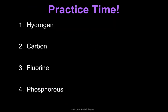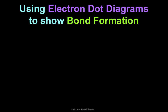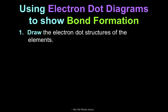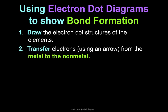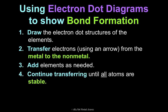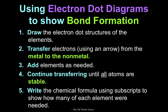Let's practice — pause the video and draw hydrogen, carbon, fluorine, and phosphorus, then press play to see the answers. The reason I want you to know how to do that is so we can use these diagrams to understand bond formation in compounds. To do that, you'll draw the electron dot structures of the elements forming a compound. To show an ionic bond, transfer electrons using an arrow to show they're going from the metal to the non-metal. Keep adding elements as needed until all items are stable, then write the chemical formula using subscripts to show how many of each element were needed.